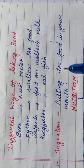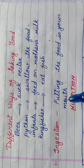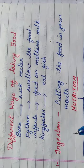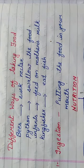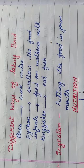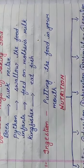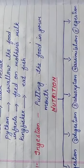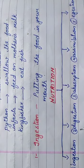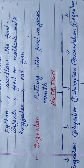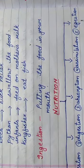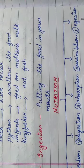Ingestion simply means putting food in your mouth. But before we go further, this chapter is about nutrition. I taught you in the first chapter what nutrition is, and I hope you remember it. Nutrition in organisms includes five steps: the first is ingestion, the second is digestion, the third is absorption, the fourth is assimilation, and the fifth is ejection.